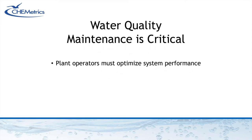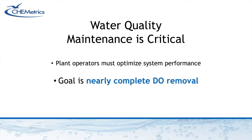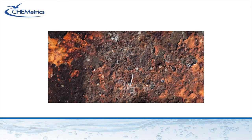The quality of boiler feed water must be carefully controlled throughout a plant's operations if you want to optimize system performance and extend the lifespan of your equipment. You want to remove virtually every bit of dissolved oxygen coursing through your system. Dissolved oxygen in water is so corrosive that if levels go unchecked, your boiler system will be destroyed.